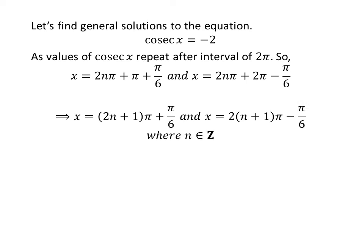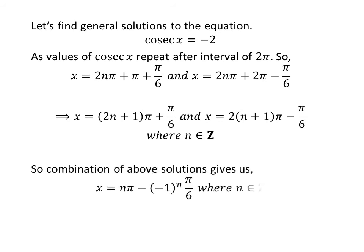Simplification gives us the general solutions as 2 times n plus 1 times pi plus pi upon 6, and 2 times n plus 1 times pi minus pi upon 6. We know 2 times n plus 1 is an odd integer, and the union of these two sets covers all integers.